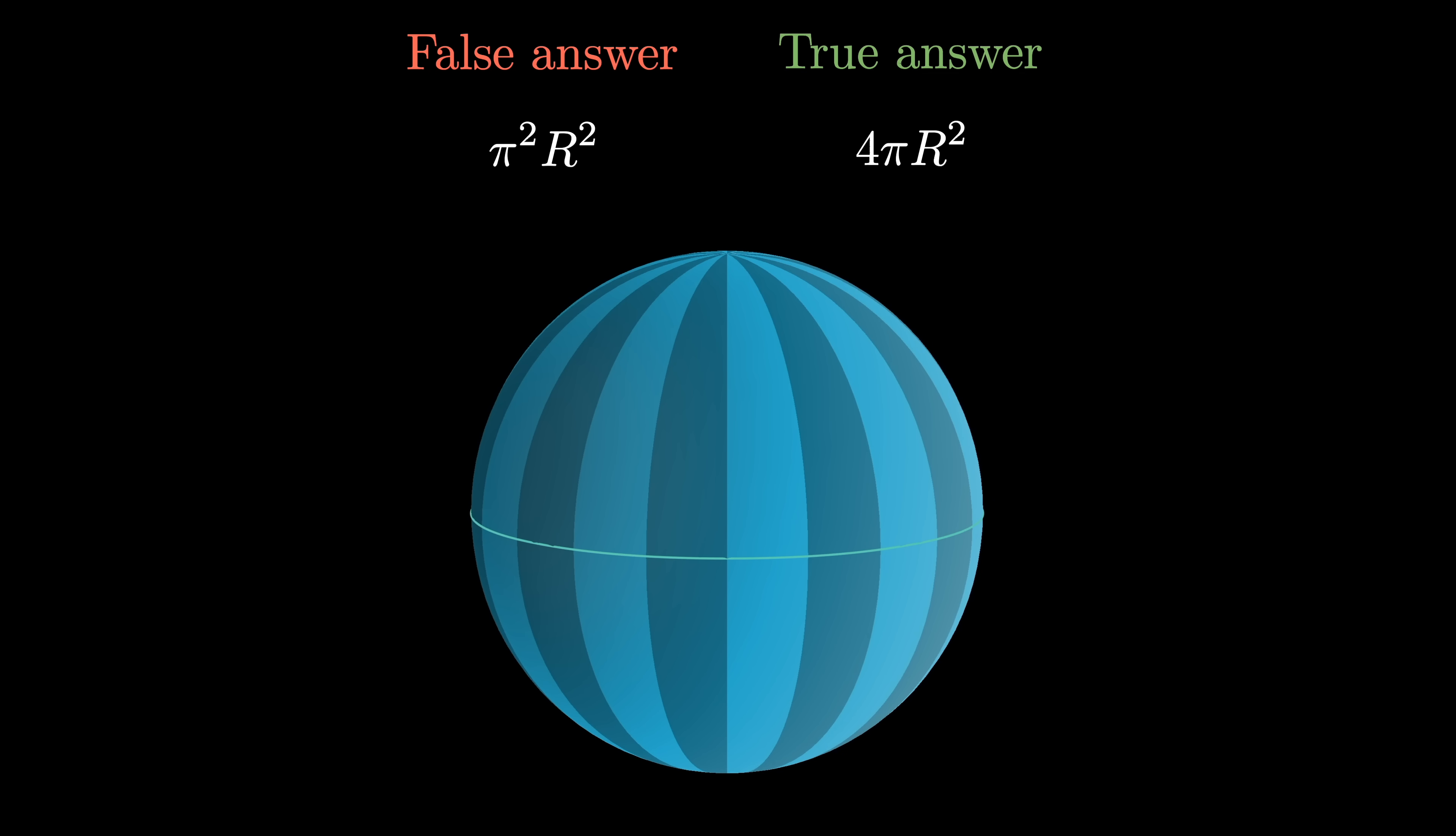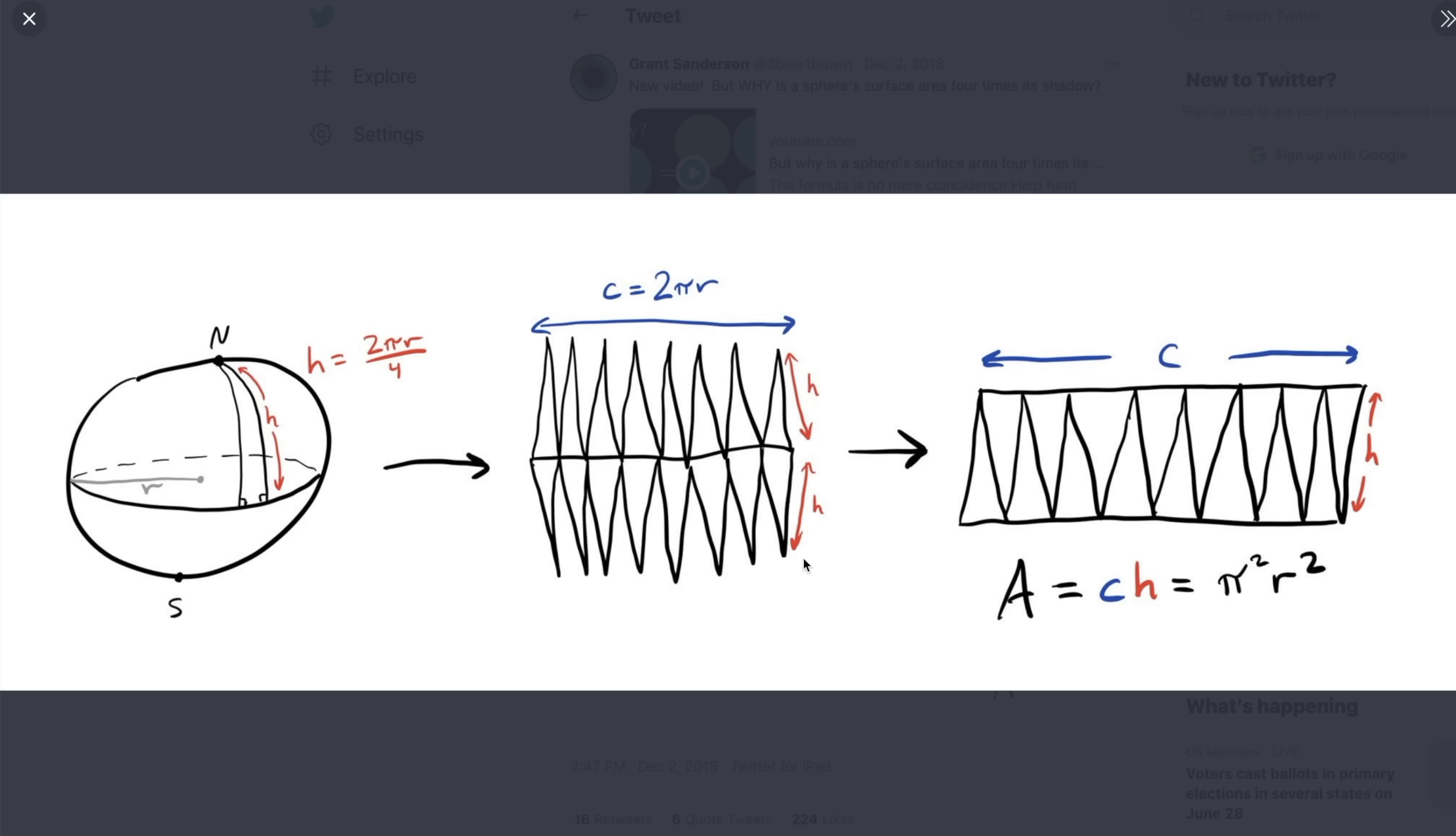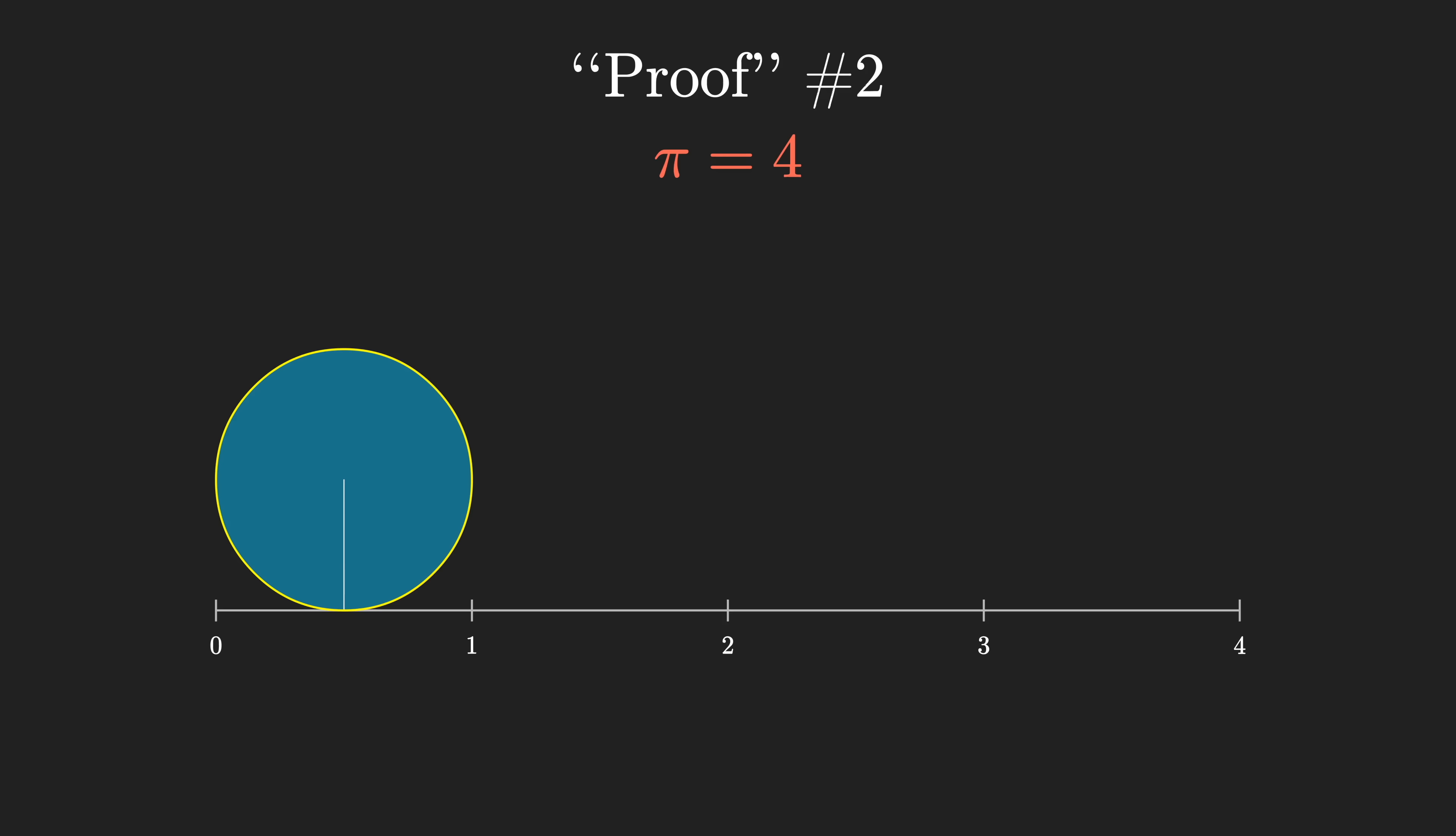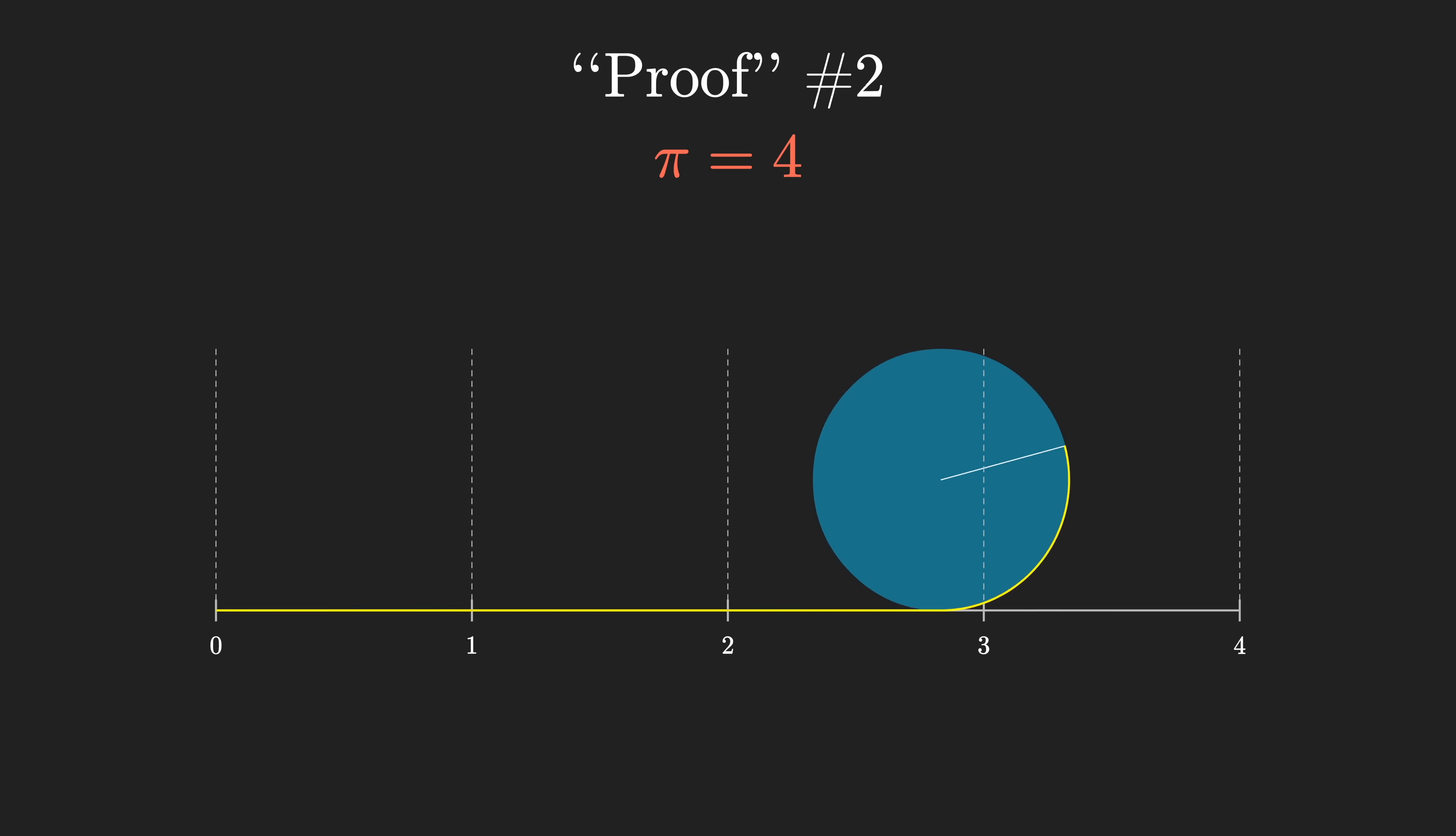I originally saw this example thanks to Henry Reich, and to be fair, it's not necessarily inconsistent with the 4πr² formula, just so long as π is equal to 4. For the next proof, I'd like to show you a simple argument for the fact that π is equal to 4.